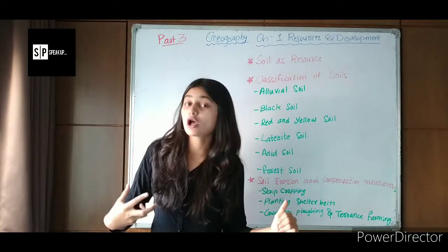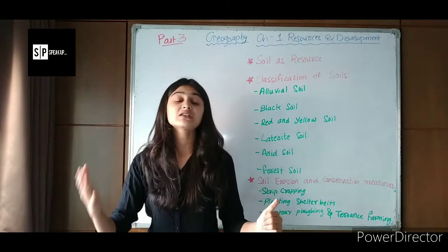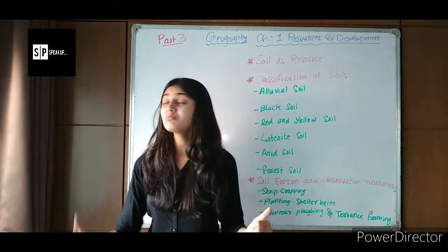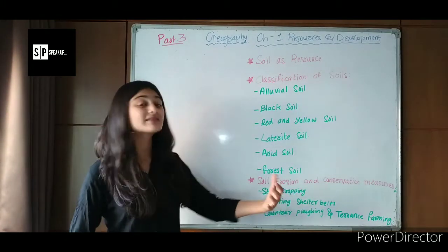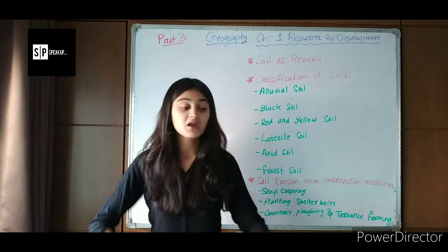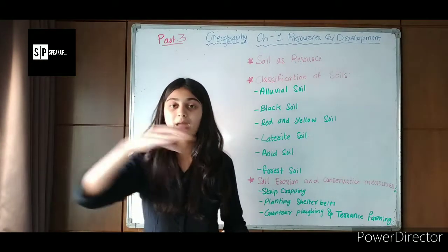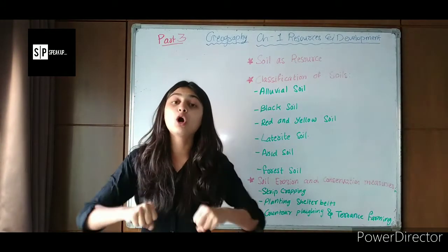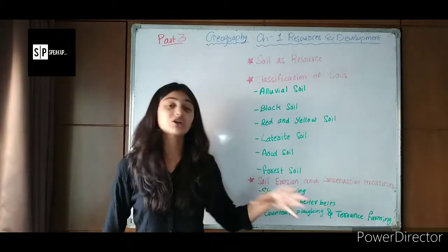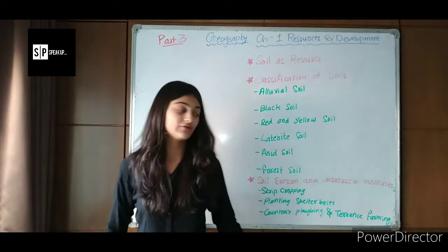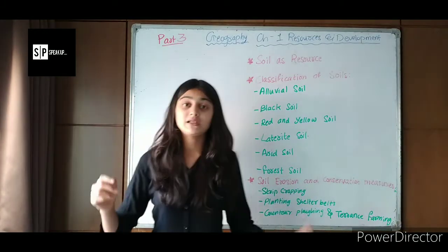Then comes soil erosion. The cause of land degradation is soil erosion, where soil gets washed out. Soil erosion can be prevented by strip cropping. If we crop plants in a strip manner, that helps to hold the soil and prevents soil erosion.